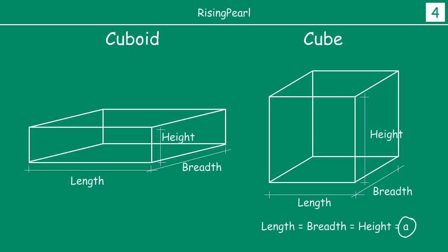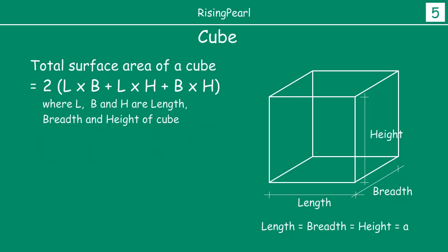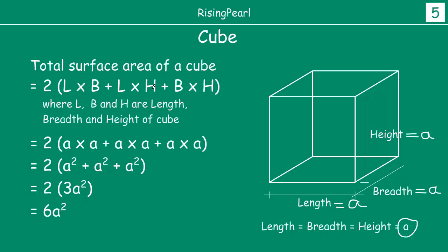Now let's find the surface area of a cube. The total surface area of a cube uses the same formula as a cuboid: 2(lb + lh + bh). Since all sides are equal, we let length = breadth = height = A. Replacing L, B, and H with A, we get 6A². So the total surface area of a cube is 6A², where A is the measure of one side.